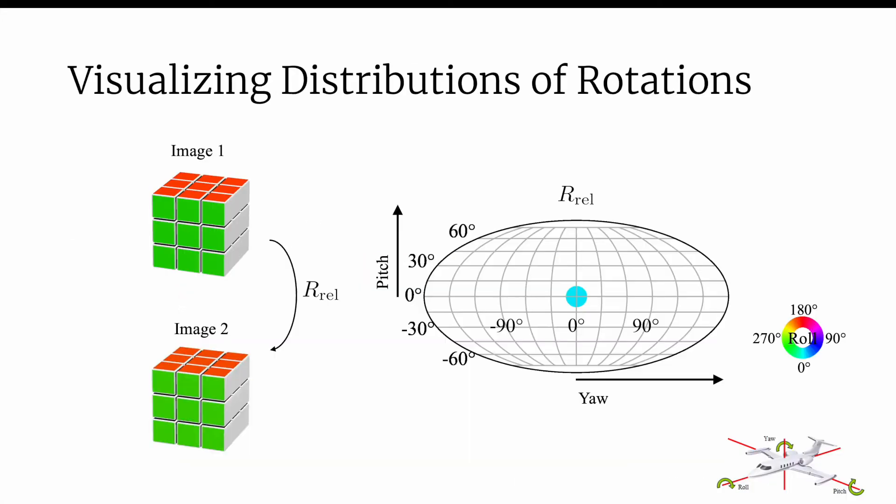To visualize our distributions, we first need a way to visualize the manifold of rotations. Rotation matrices have 3 degrees of freedom. To visualize each rotation matrix, we project them onto a two-sphere, where the x-axis represents yaw, y-axis represents pitch, and color represents roll. Since each rotation is associated with a probability, we use the size to represent probability density and remove rotations with negligible probability.